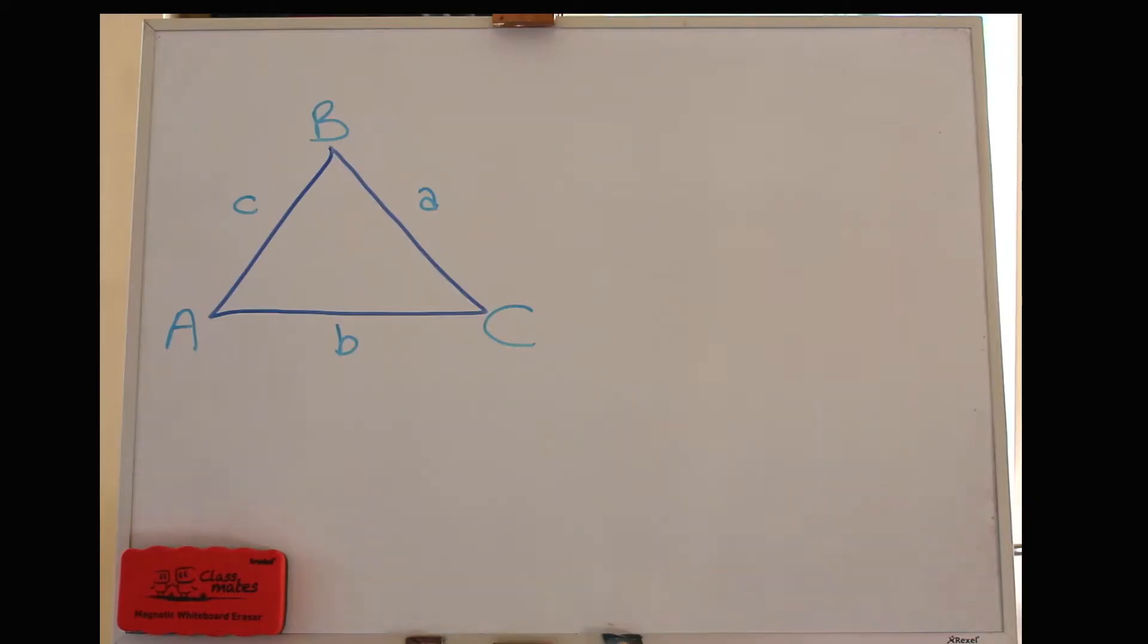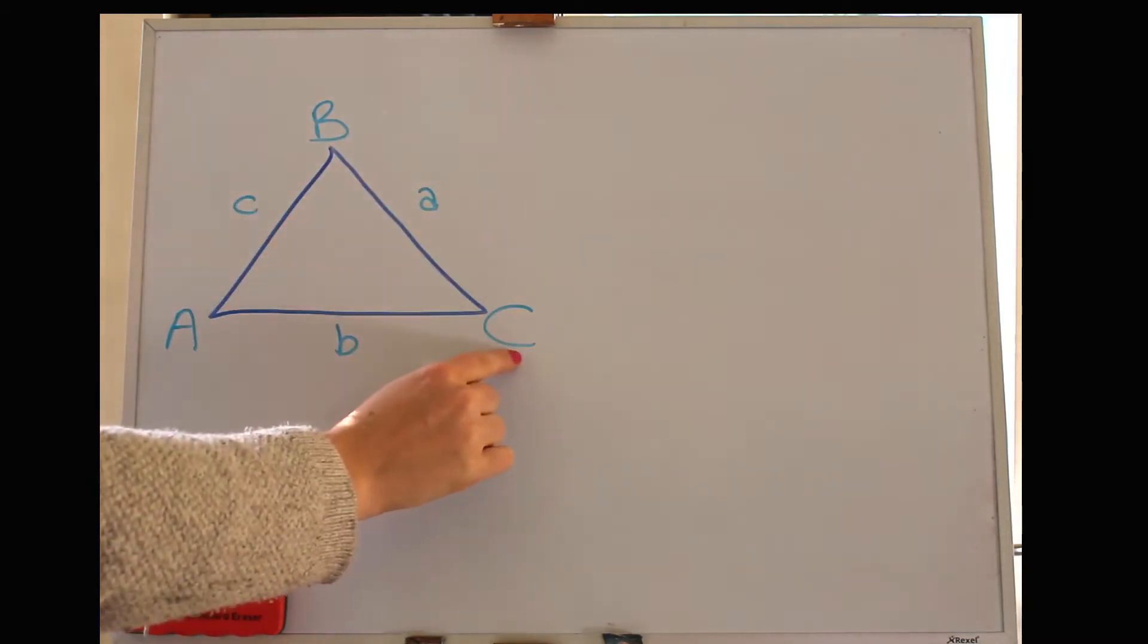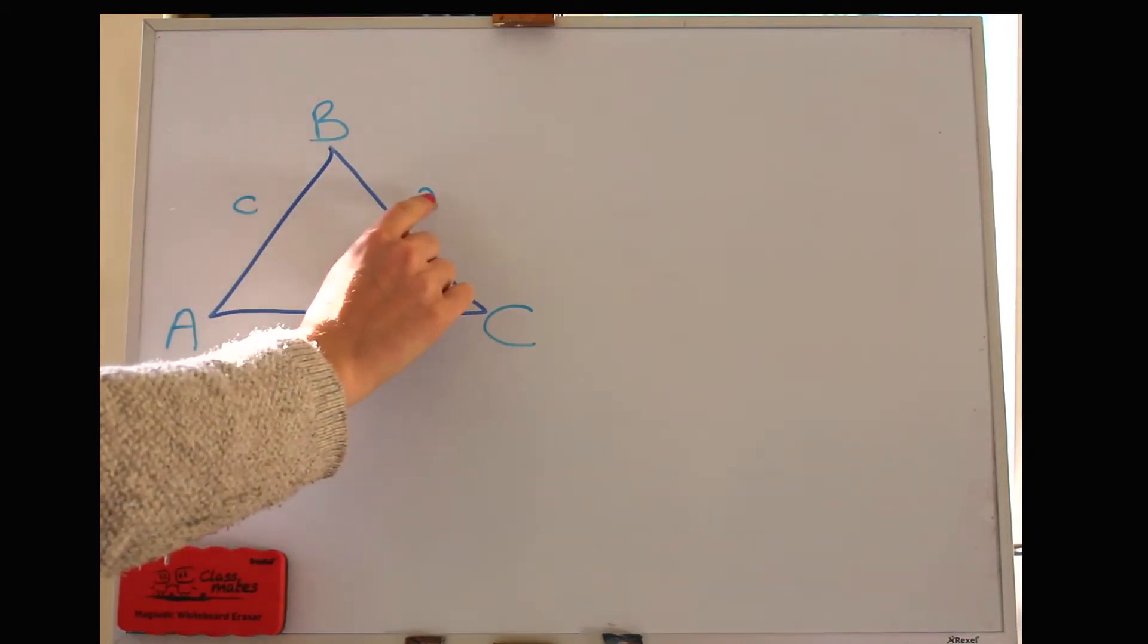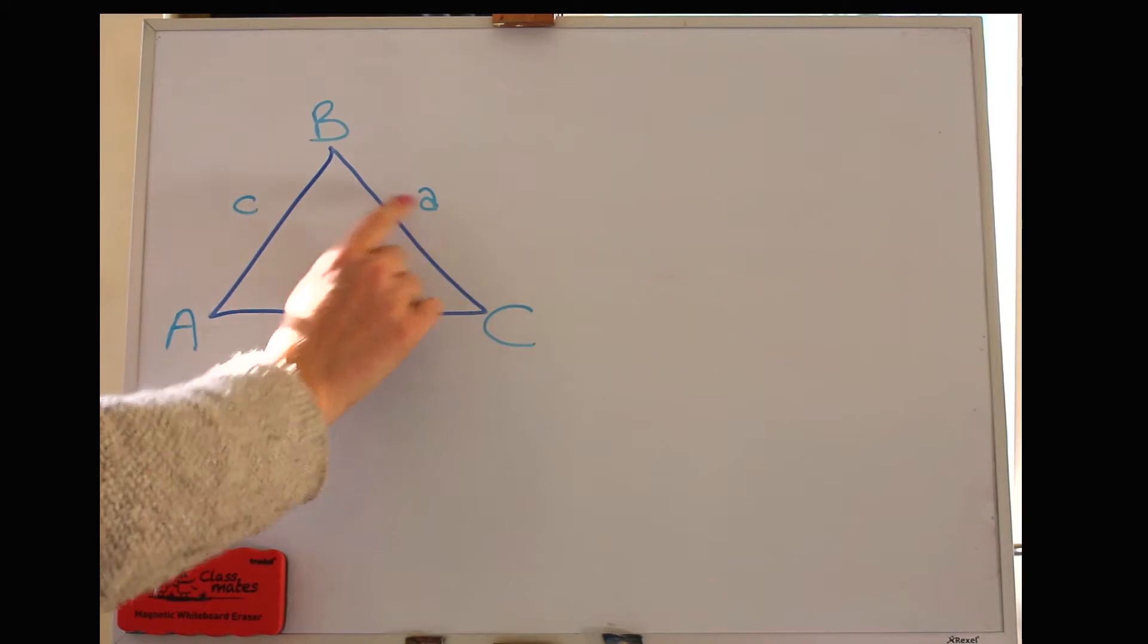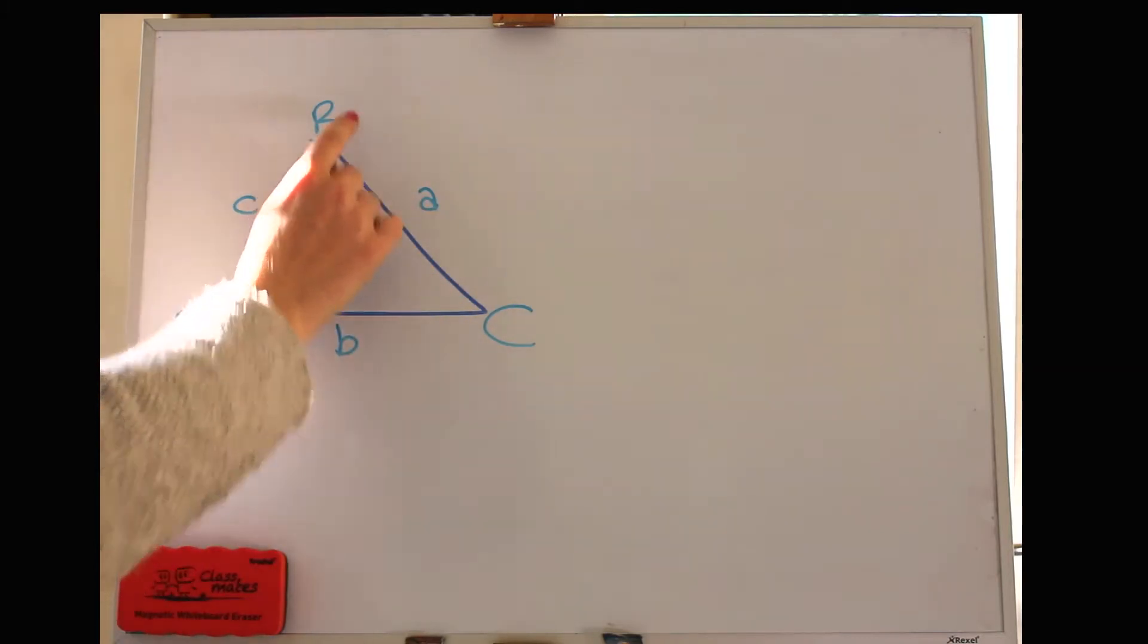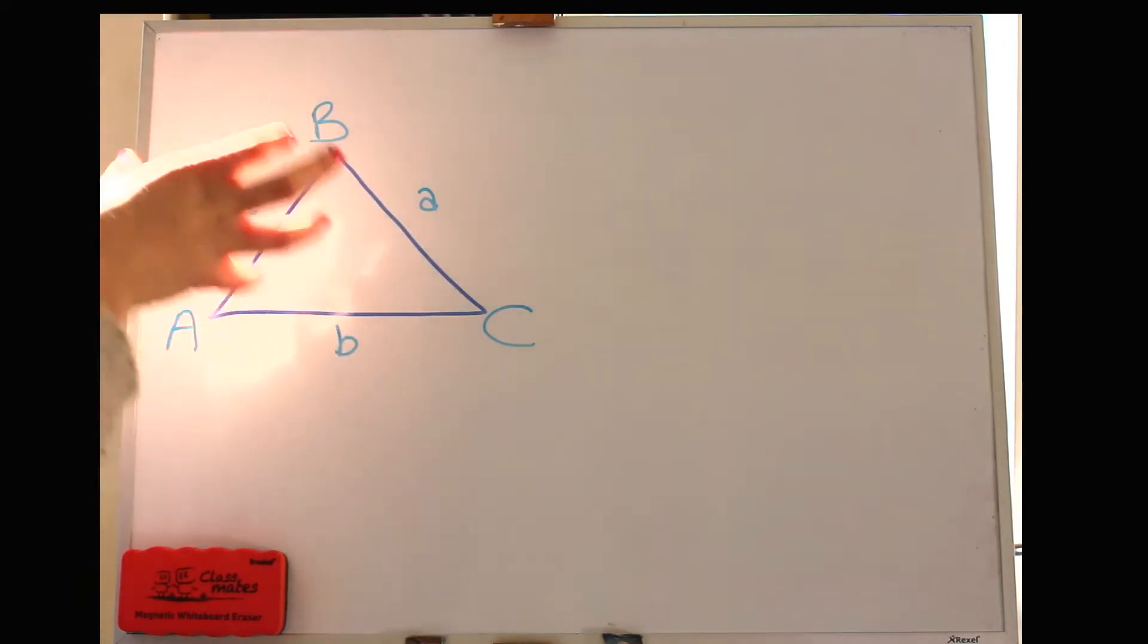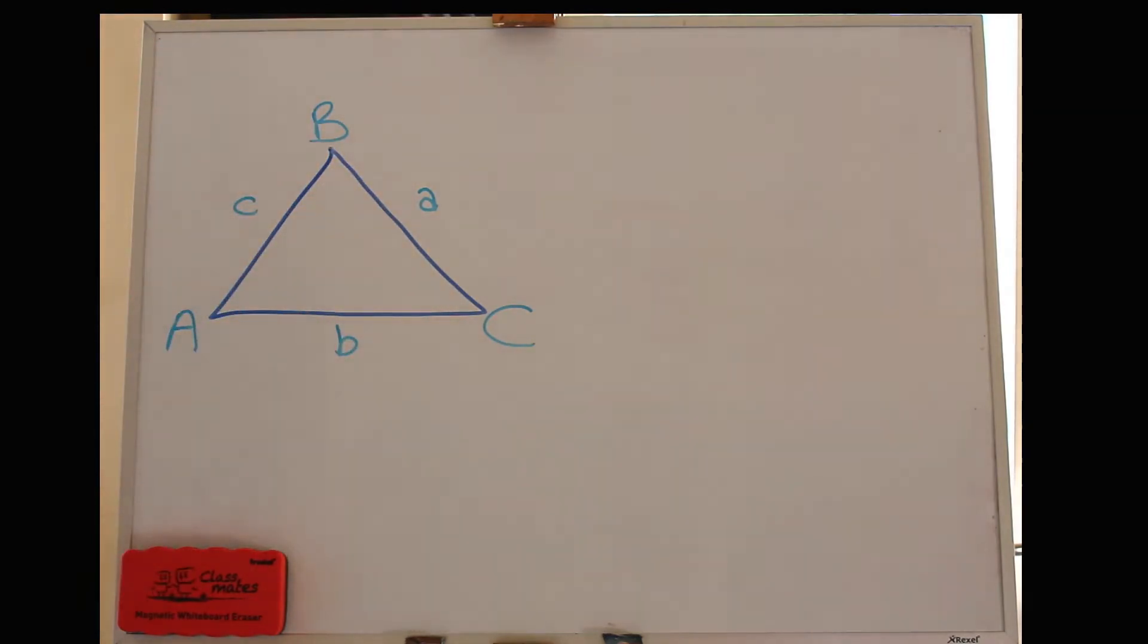So I'm going to show you the area of a triangle and the sine cosine rules and for those formulas, we're going to use a triangle that's labeled like this. So the corners are labeled with uppercase letters and their corresponding opposite sides are labeled with lowercase. So opposite A is a, opposite B is b and opposite C is c. So small letters for sides, big letters for corners.